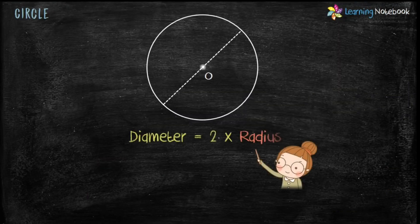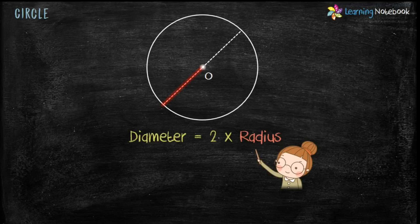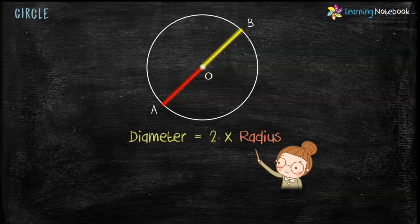Now, diameter equals 2, 2 into radius, where OB or OA is the radius of the circle.